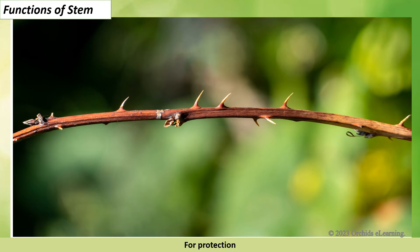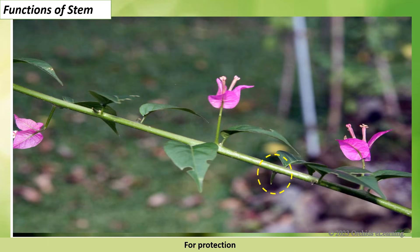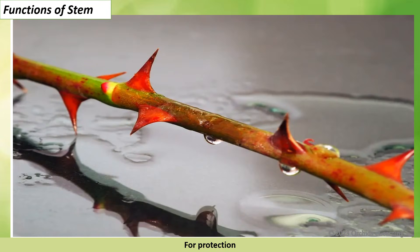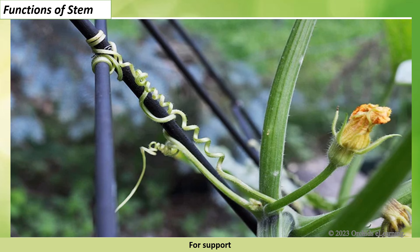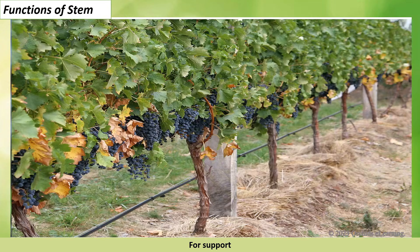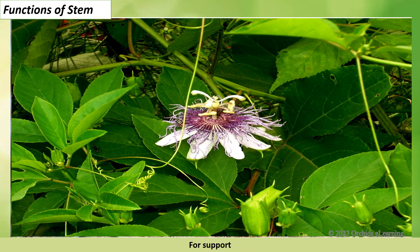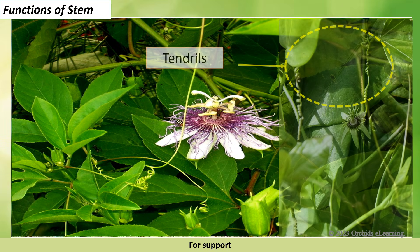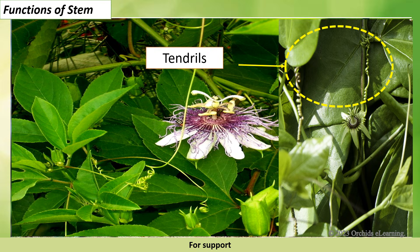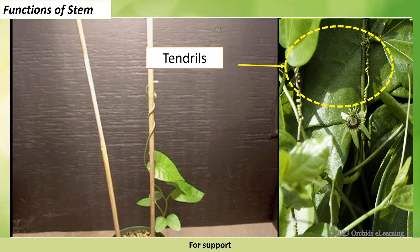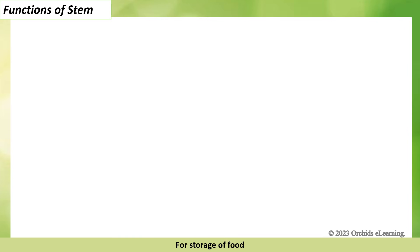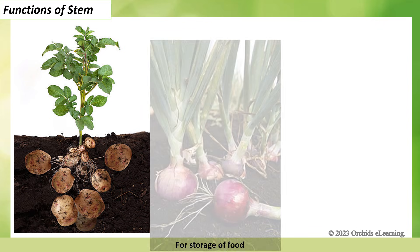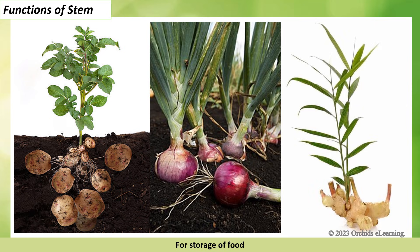For protection: stems may be modified as thorns such as in bougainvillea, or may be in the form of hard and sharp prickles as in rose, to protect the plant from being eaten by animals. For support: stems of climbers such as grapes and passion flowers are modified to form special structures called tendrils, which help climber plants with weak stems to attach themselves to others for support.